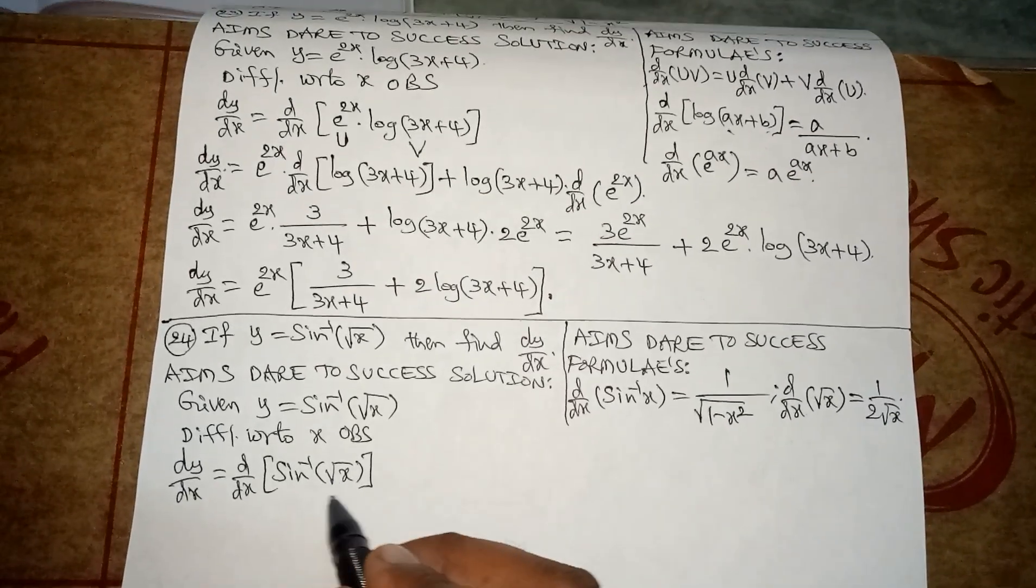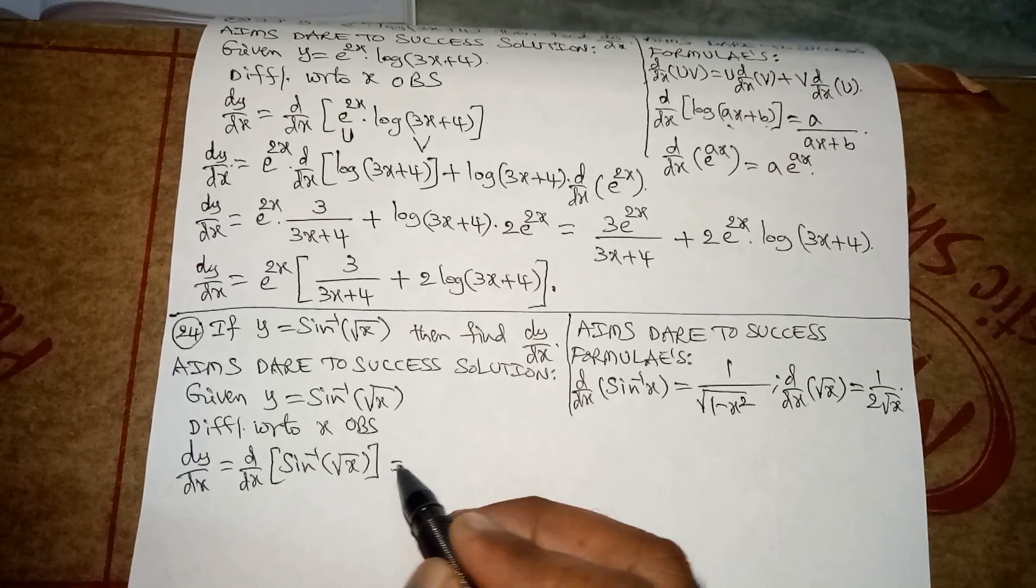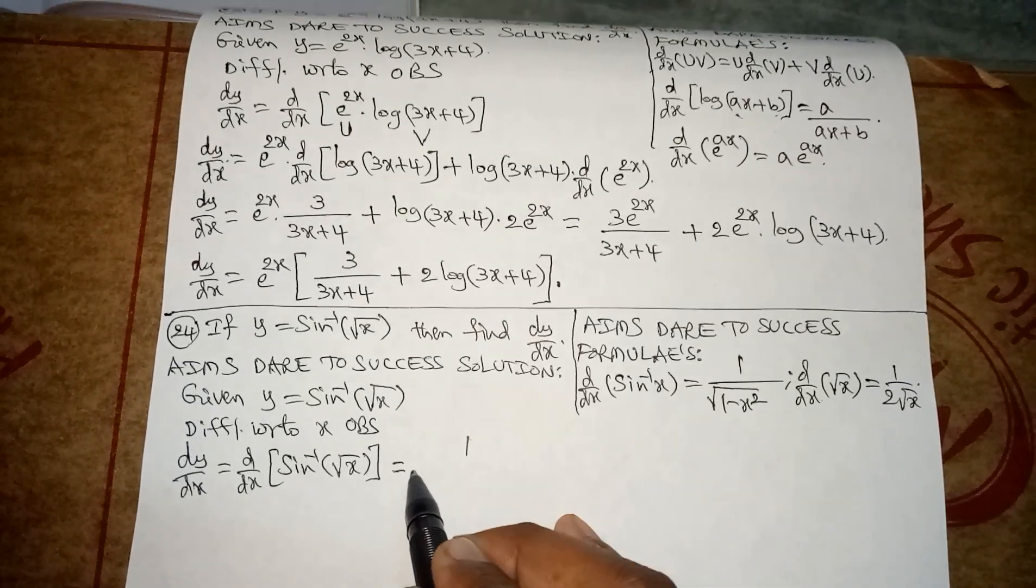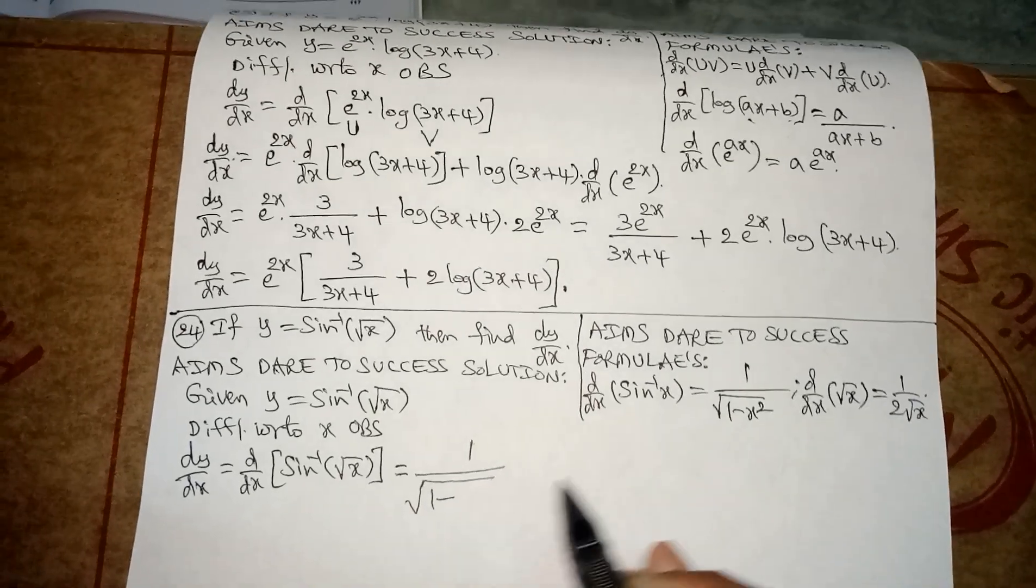So here x value is root x. Substitute that, we get 1 by root 1 minus, x value is root x, so I want to write root x whole square.